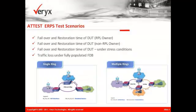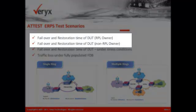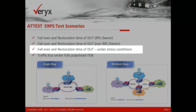The ADDIST ERPS test cases verify the Ethernet ring protection switching support for various test scenarios. The ADDIST ERPS determines the failover and restoration time of the device under test as ring protection link owner and non-ring protection link owner in single and multiple rings.